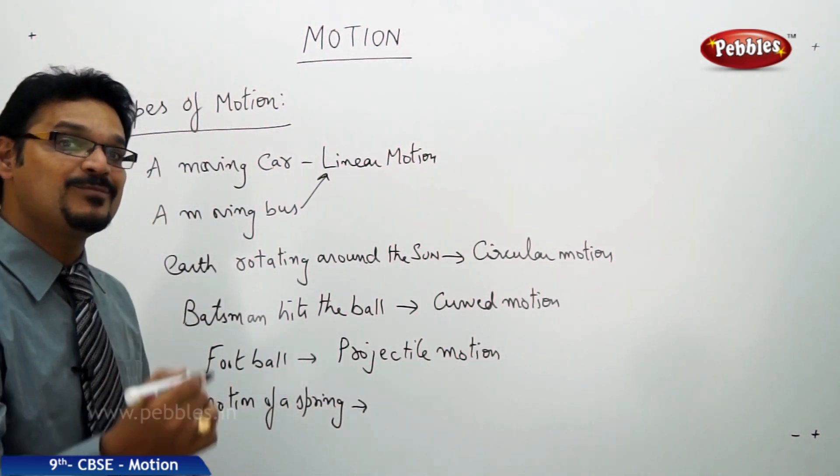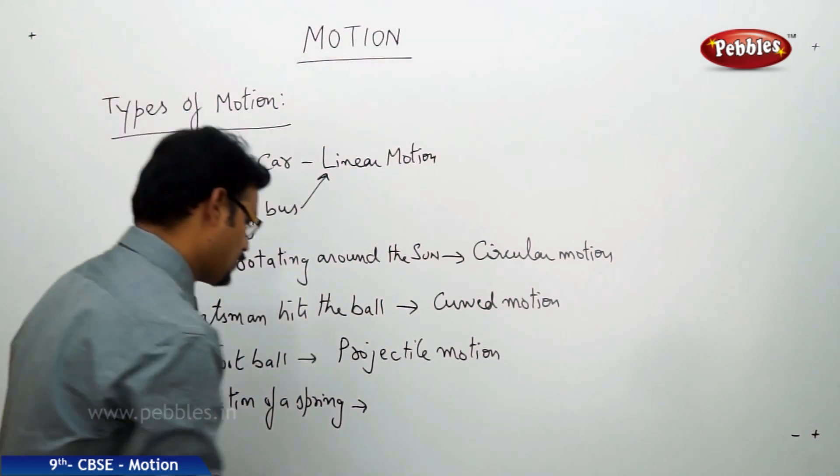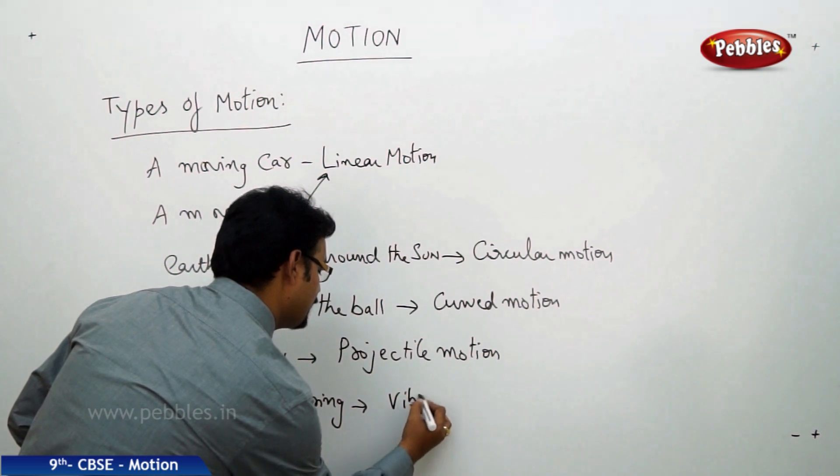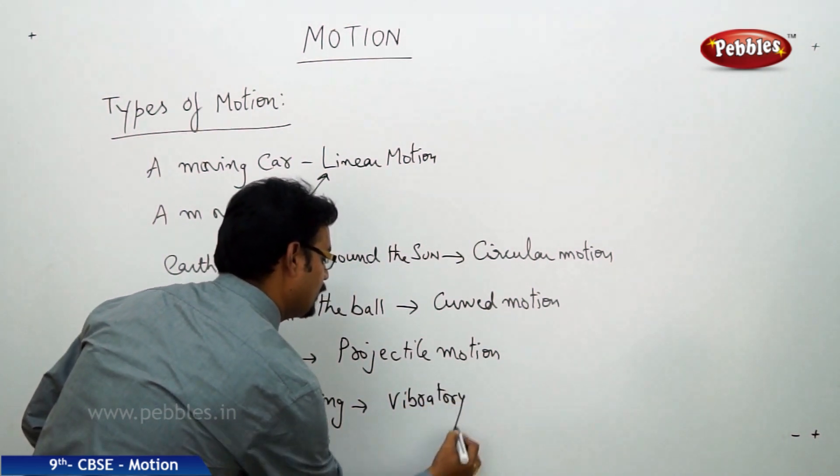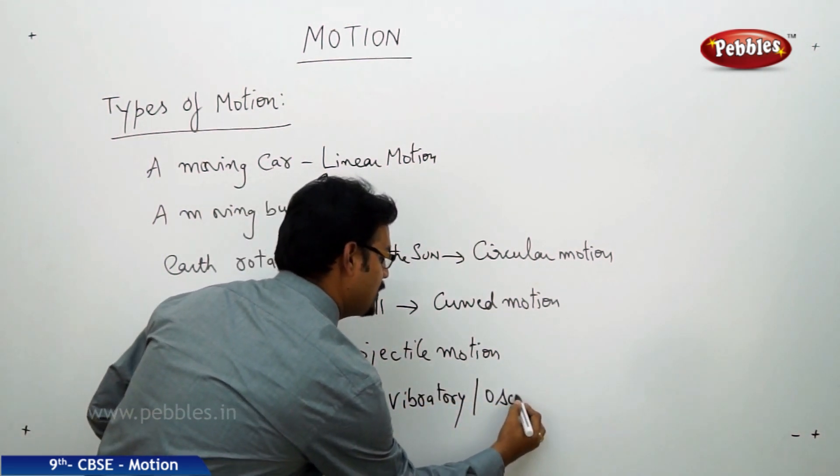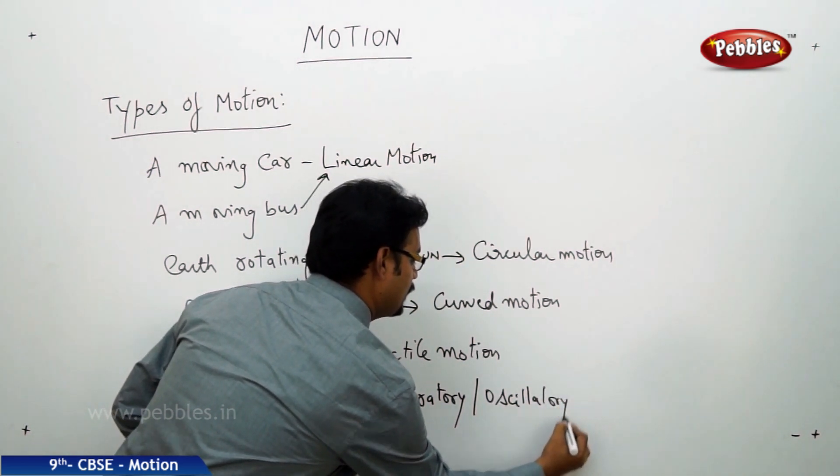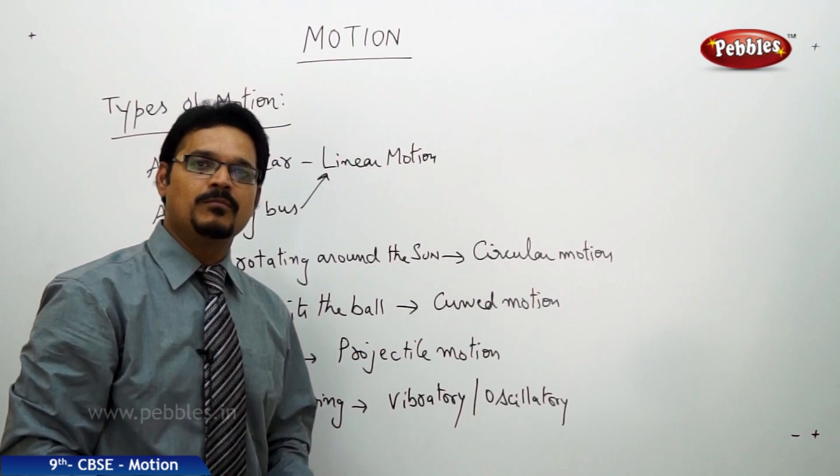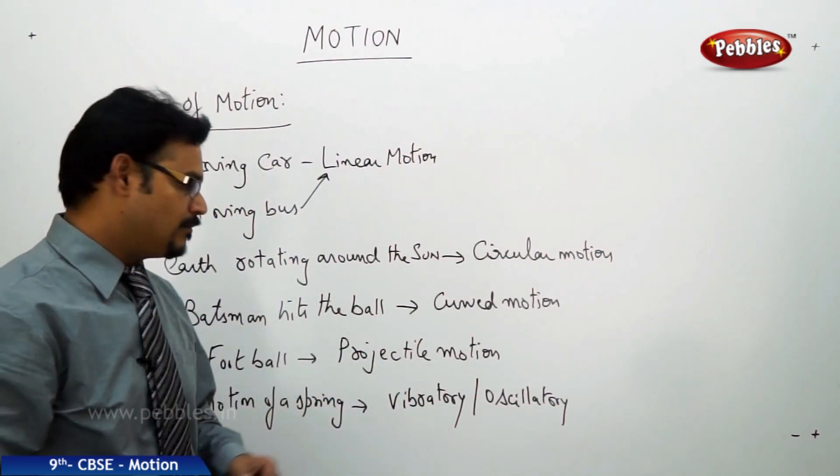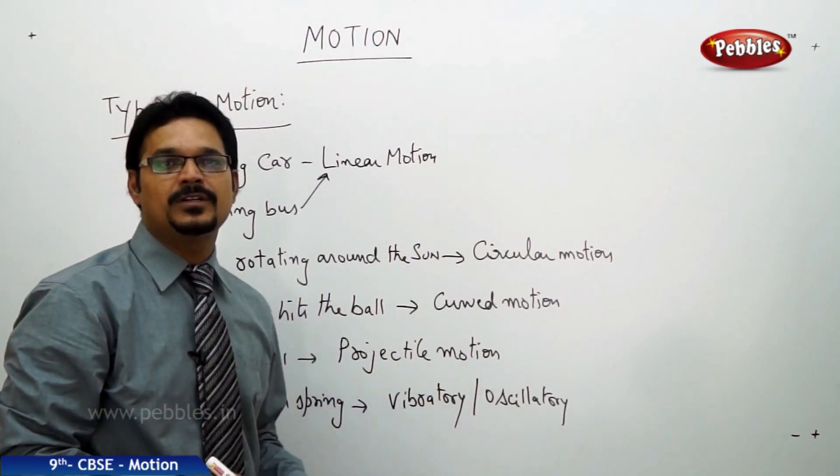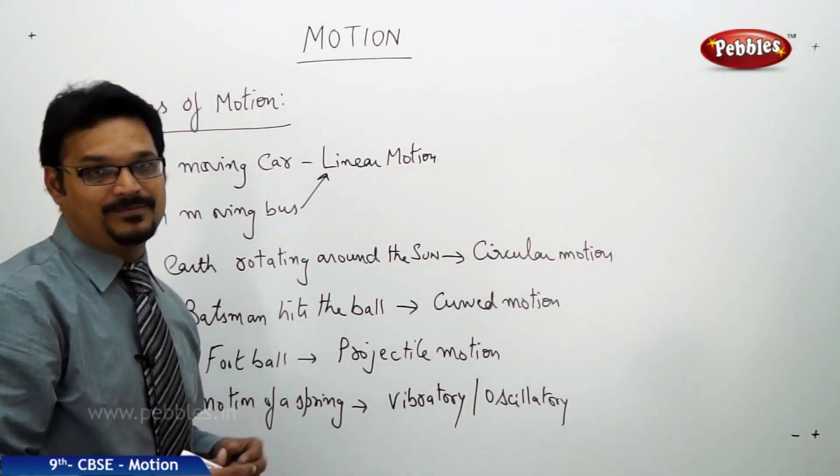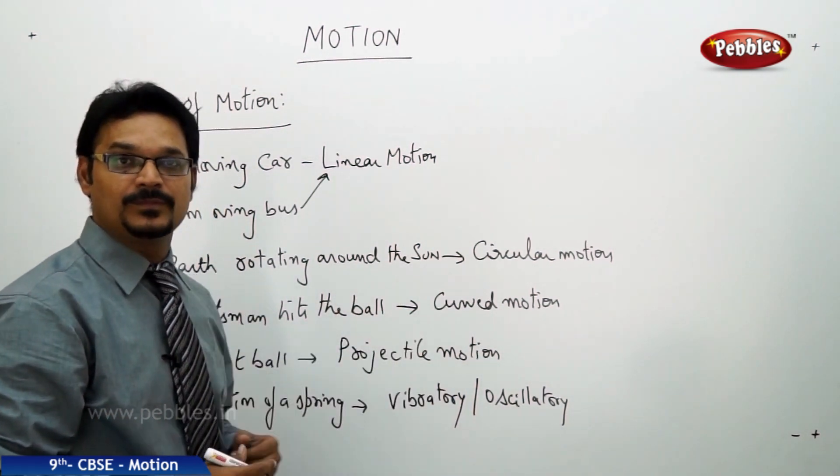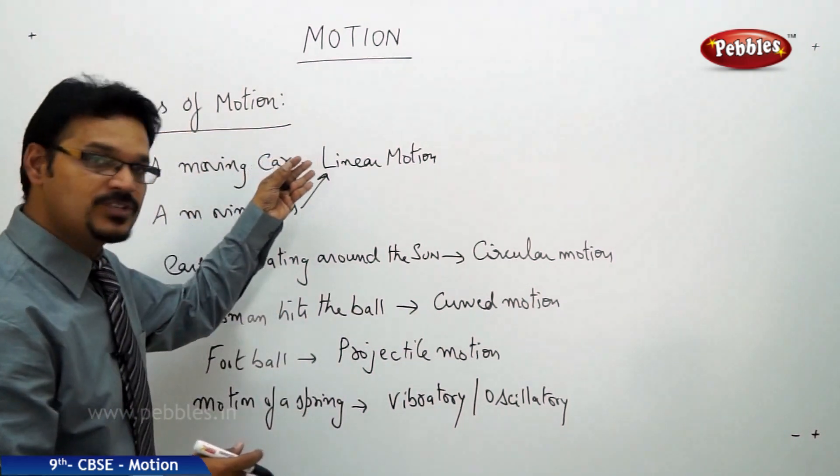Motion of the spring, what type of motion it is? Yes, it is called vibratory or you can say oscillatory. There's a slight difference between vibratory and oscillatory, but here we don't discuss the difference. But vibratory or oscillatory is nothing but back-and-forth motion, I can say to-and-fro motion, like motion of a pendulum.